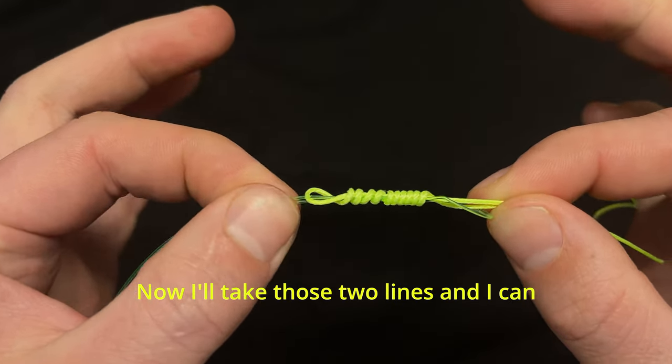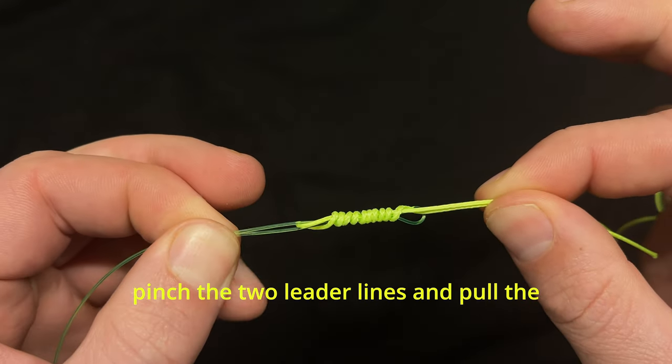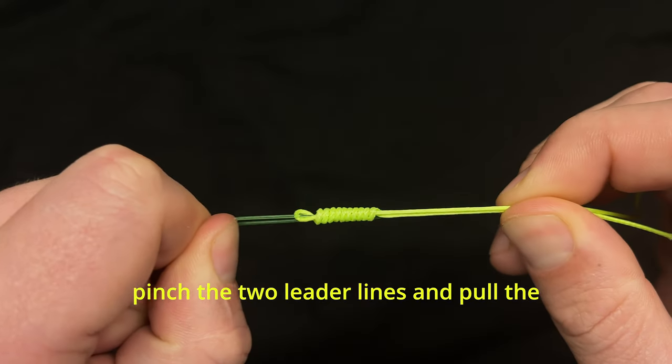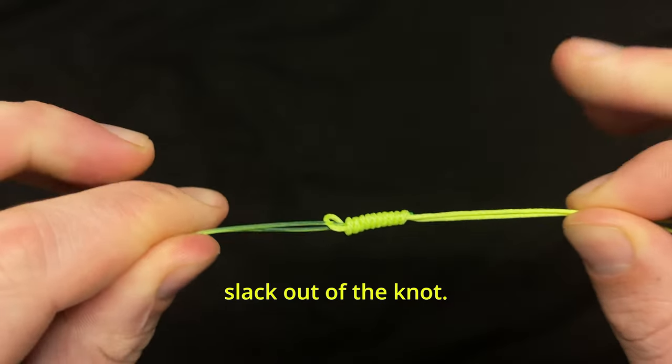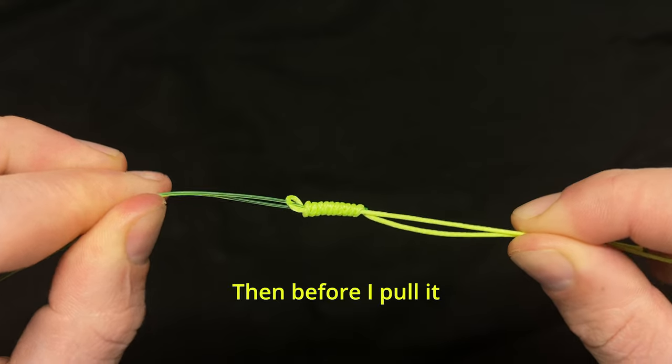Now I'll take those two lines and I can pinch the two leader lines and pull the slack out of the knot. Then before I pull it tight I want to wet the line.